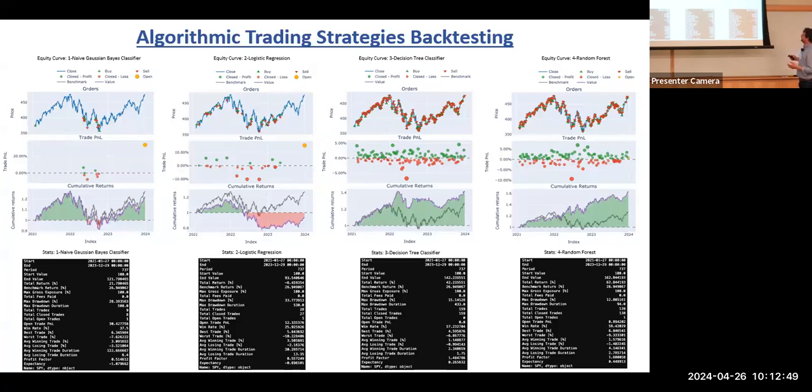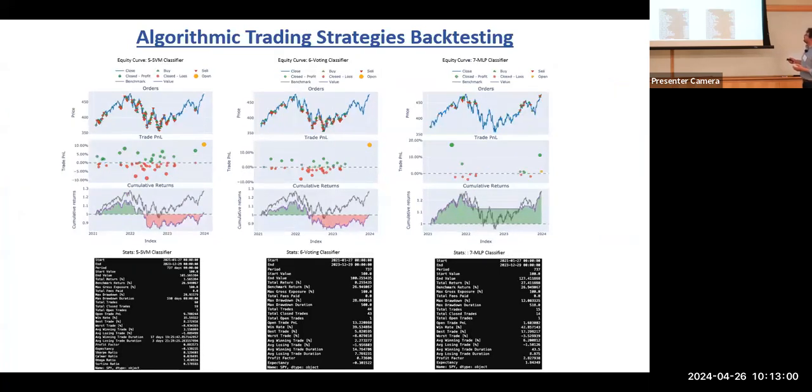For random forest you have a 62% performance compared to 26% performance of the SPY. The other model which is really attractive is the MLP classifier, the multi-layer perceptron. It's slightly better than the benchmark but has the lowest max drawdown when compared with the rest of the models and has a profit factor which is quite interesting.